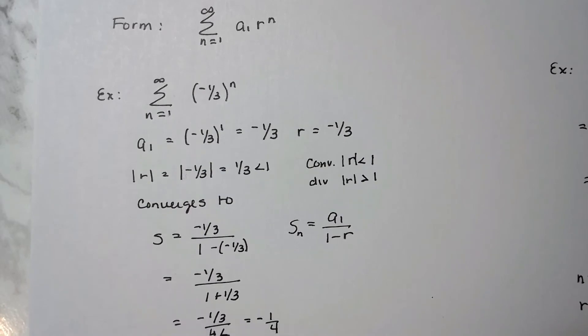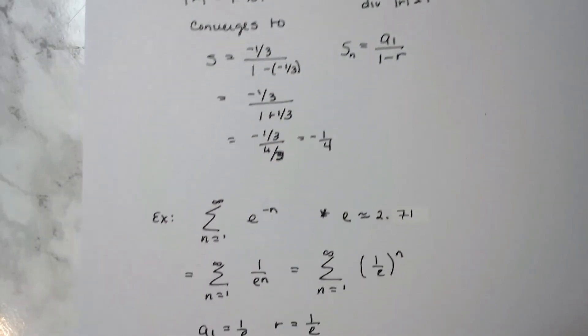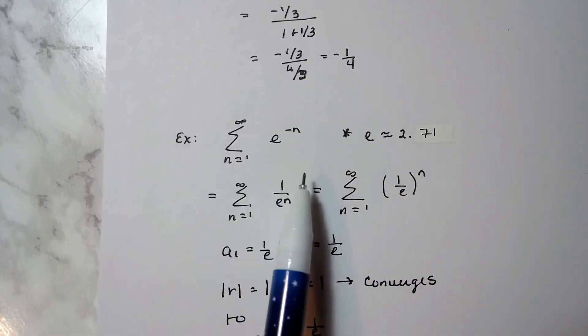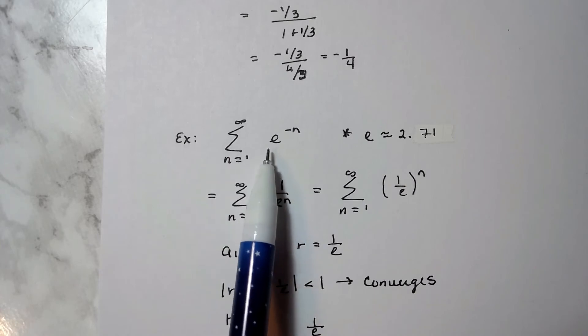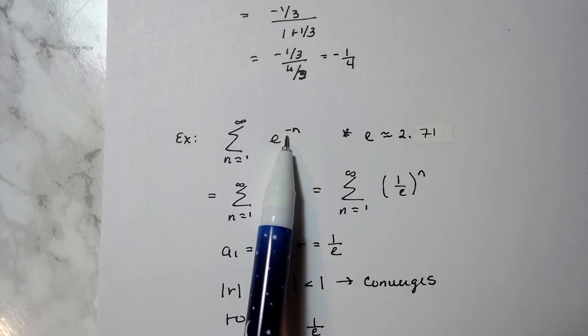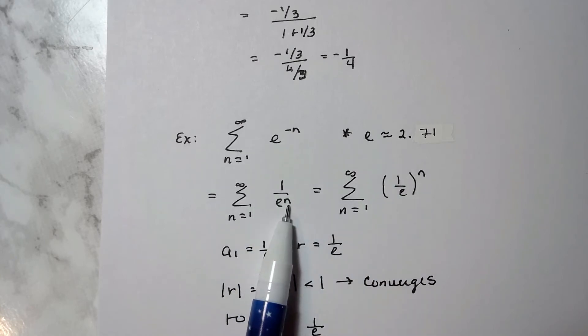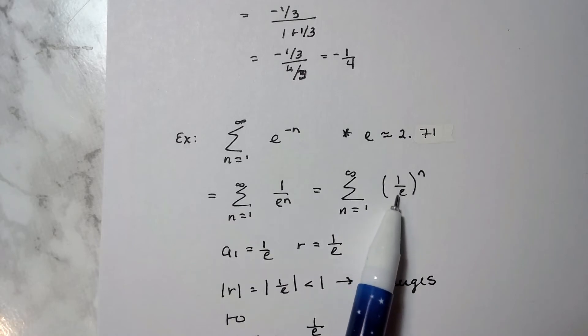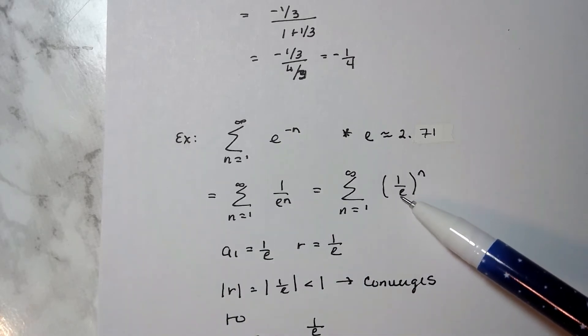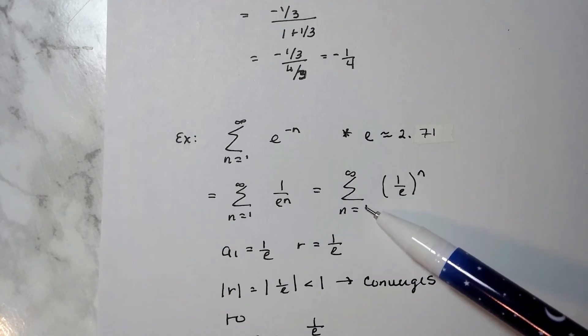Here's one that's a little tricky because it might not be spotted right away, but this is definitely a geometric series. Why? Because e to the e is a number first and foremost, and e to the negative n I can rewrite as 1 over e to the n, which then I can write as the quantity 1 over e to the n. Just remember that 1 to the n is 1.